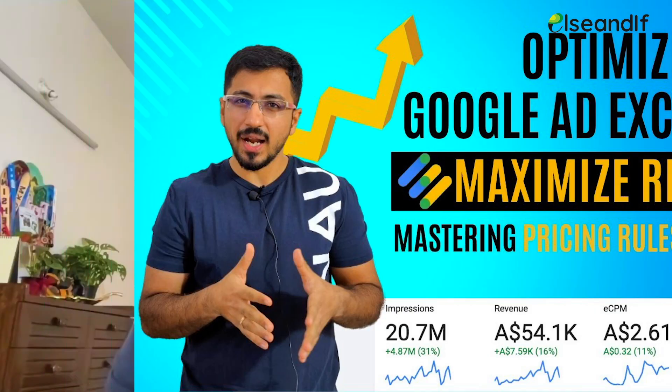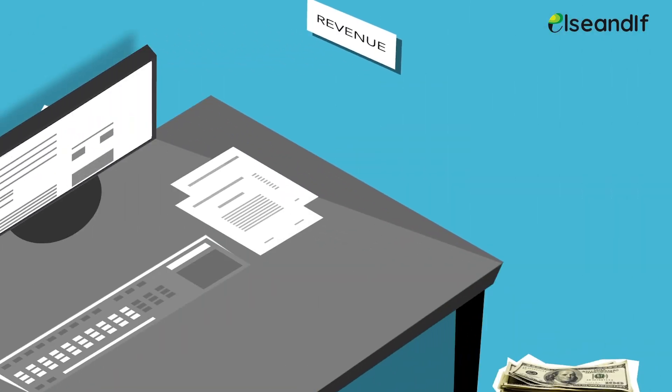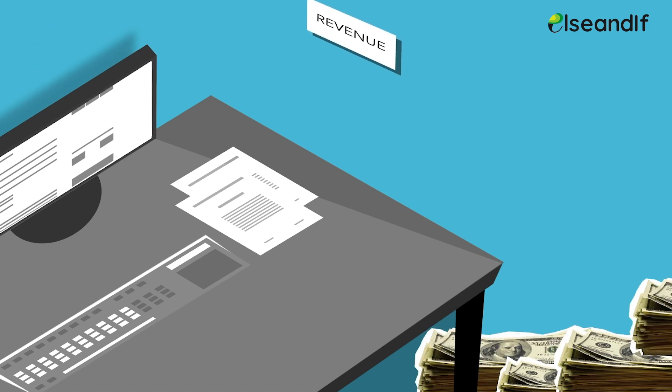Number four: mastering pricing rules. Mastering pricing rules is of utmost importance to unlock your ad inventory's potential. Identifying the critical segments on which you should apply pricing and setting up the right pricing for those segments will ensure you master your pricing rules. I have already created two detailed video tutorials around this and will share the links in the description. Getting your pricing rules right can mean a revenue uplift of anywhere between 10 to 50 percent.